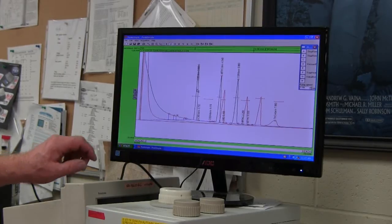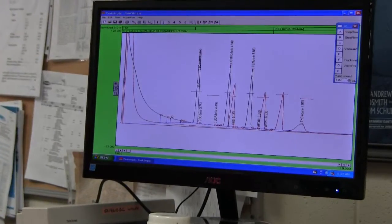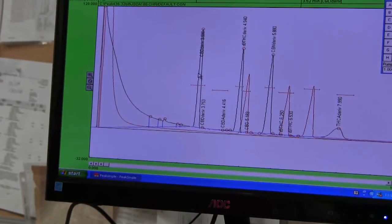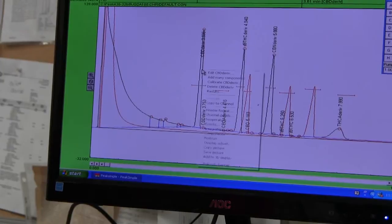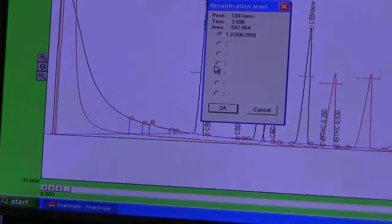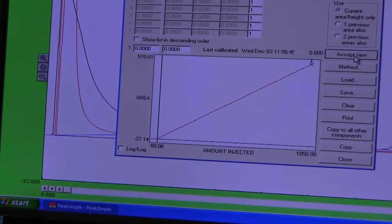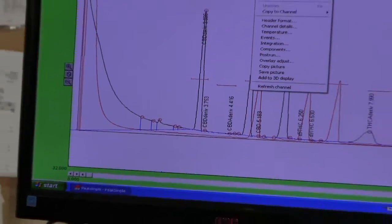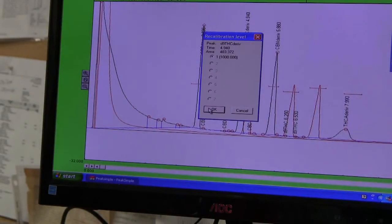So what we need to do is to calibrate the derivatized CBD, delta-9, and CBN. And we do that the same way, by pointing to the peak, calibrating the derivatized peak, accepting new and close. And we do that for each of the three derivatized cannabinoid peaks.